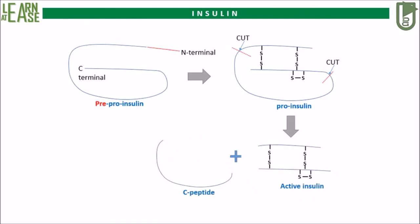Structurally, mature insulin has peptide A, which is 21 amino acids long, and peptide B, which is 30 amino acids long. The disulfide bonds occur between the 7th residue of the A and B chain, the 19th residue of the A chain and the 20th residue of the B chain, and the 6th and 11th residues of the A chain.